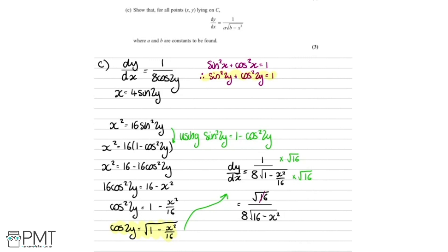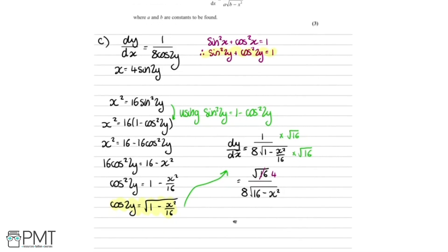We get one mark for the working to get dy by dx with no y's on the right-hand side, the second mark for the correct expression for dy by dx, and the final mark for simplifying down into the required form: dy by dx equals 1 over 2 times the square root of 16 minus x squared, with A equals 2 and B equals 16.